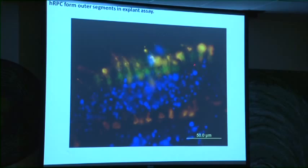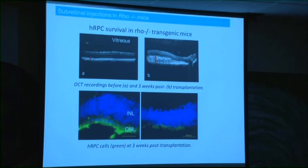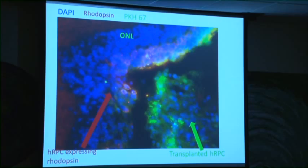This shows an explant assay where grafted cells (green) are added to a retina and stained for photoreceptor markers — rhodopsin. The outer edges of these cells are forming what look like outer segments. They line up in the outer nuclear layer and start making rhodopsin. When transplanted into a mouse — visible here in an OCT image — we can see the bolus in the subretinal space. Labeling human cells for human mitochondrial markers shows them lining up in the outer nuclear layer where we want them. They migrate to the right place and make photoreceptors.